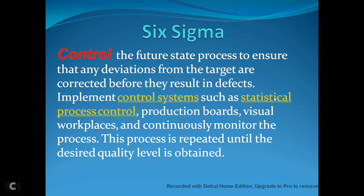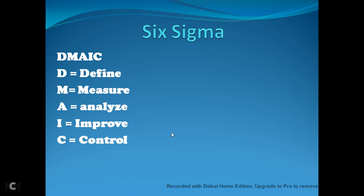The fifth phase is Control. Having established a new process, control ensures that the process is properly followed. It corrects any deviations, variations, or dispersions from the targets before they result in defects. Control systems such as statistical process control, production boards, and visual workplaces are implemented to continuously monitor the process until the desired quality level is obtained.